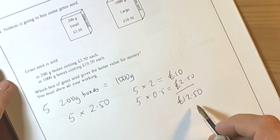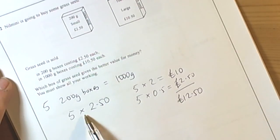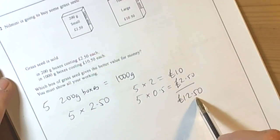Now it's a star question, so we've got to be careful here. So it's saying which grass seed gives better value for money. Well, buying the equivalent of 200g boxes to make the 1000 is going to cost me £12.50.